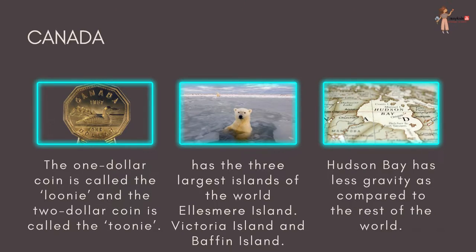The $1 coin is called the loonie and the $2 coin is called the toonie. Canada also has three of the largest islands in the world: Ellesmere Island, Victoria Island, and Baffin Island. Hudson Bay has less gravity compared to the rest of the world. This is because during the Ice Age the entire country of Canada was covered by a huge glacier known as the Laurentide Ice Sheet. This glacier was so heavy that it squeezed down on the rocks of the earth. When the ice finally started melting, the earth slowly bounced back, and the decreased mass of rock caused a reduction in gravity in that region.